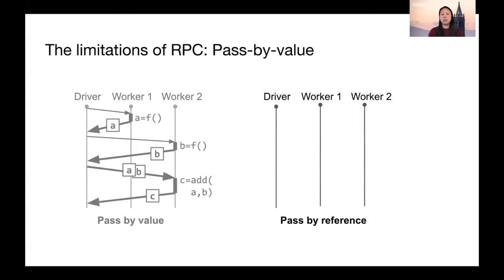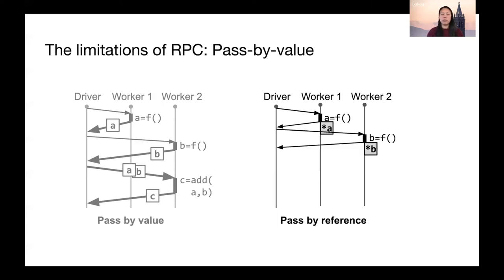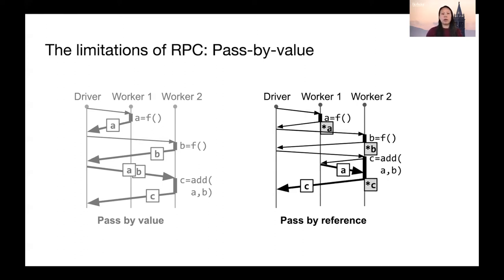The obvious solution is to pass the values by reference instead. When worker1 executes f, it stores a in its local memory instead of returning it to the driver, and the same thing happens for the second call to f. When invoking add, the driver can send references to a and b instead of the values. Worker2 then only has to fetch a, and we can avoid the unnecessary copies back to the driver.